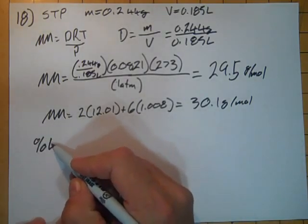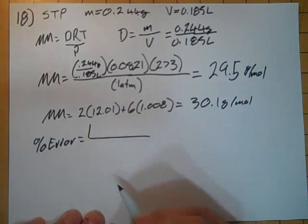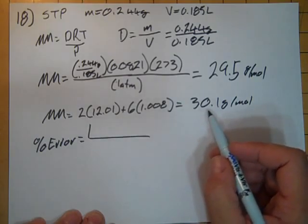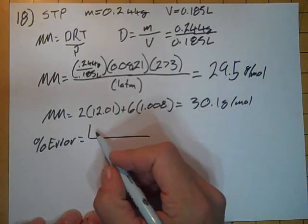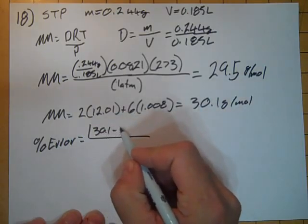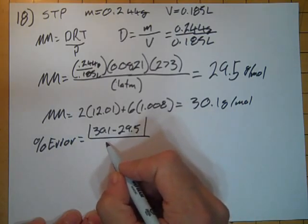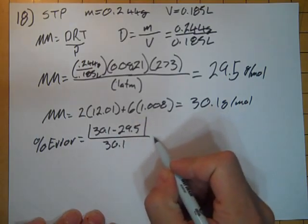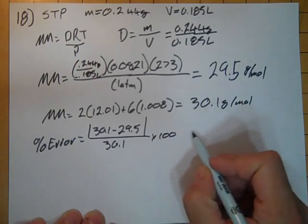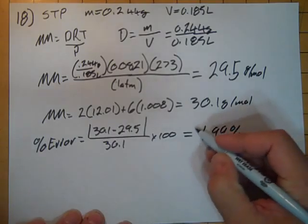Well, percent error equals the absolute value of the error between the expected and the experimental, divided by the expected, sometimes it's called the actual, times 100. And we find out that we have 1.99% error.